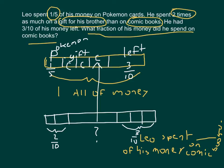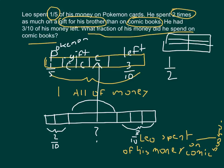That one-half is divided into three equal parts — the comic books portion C and the gift portion 2C. One-half divided into three parts: one-half equals three-sixths, so each part is one-sixth. One-sixth plus one-sixth plus one-sixth equals three-sixths, which means Leo spent one-sixth of his money on comic books.